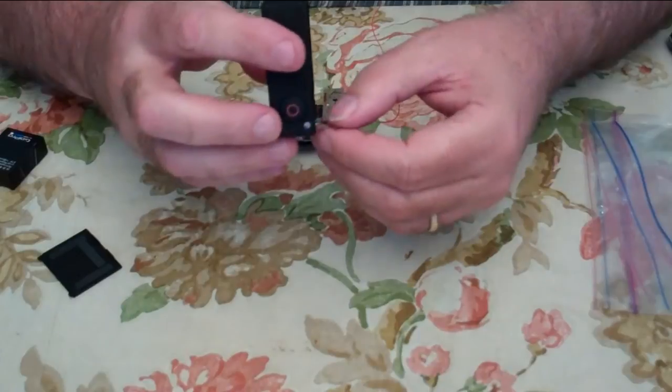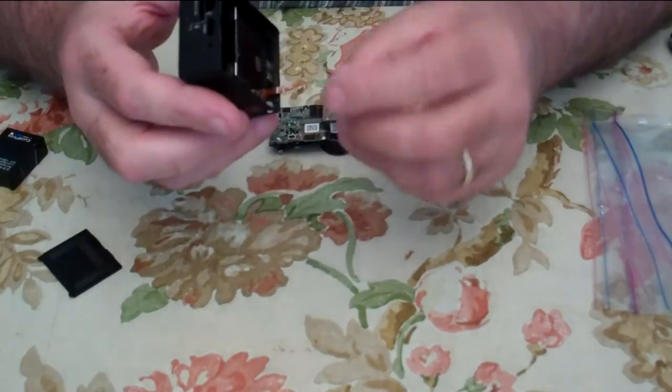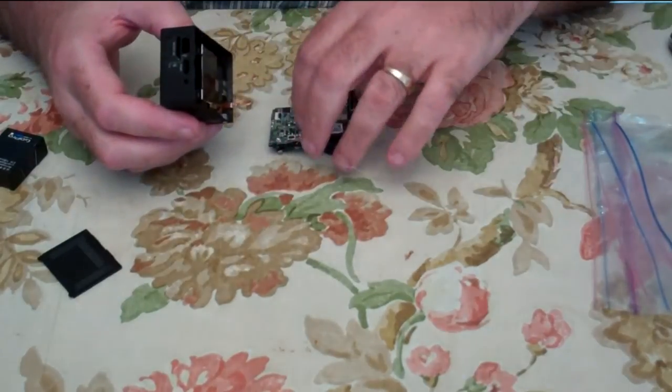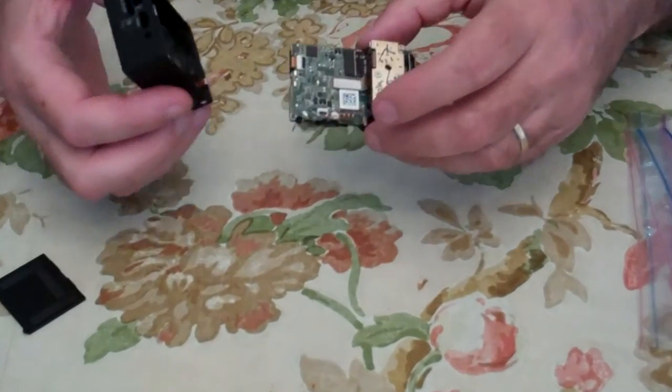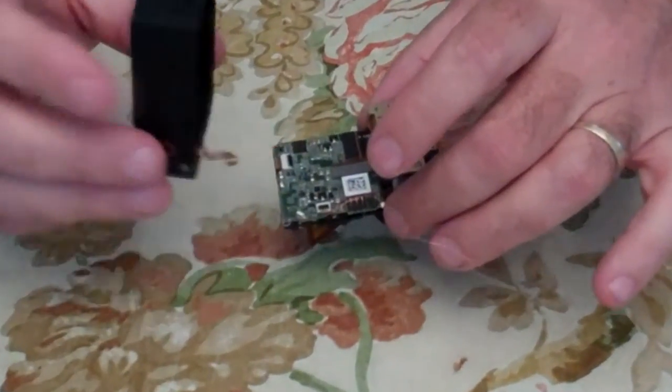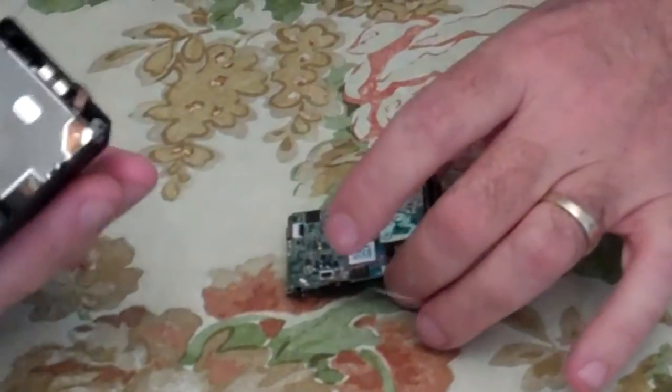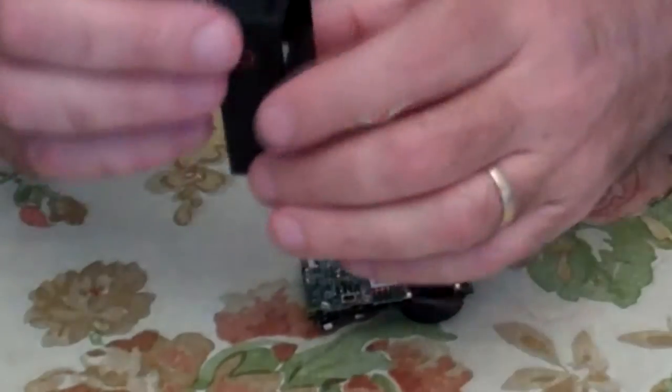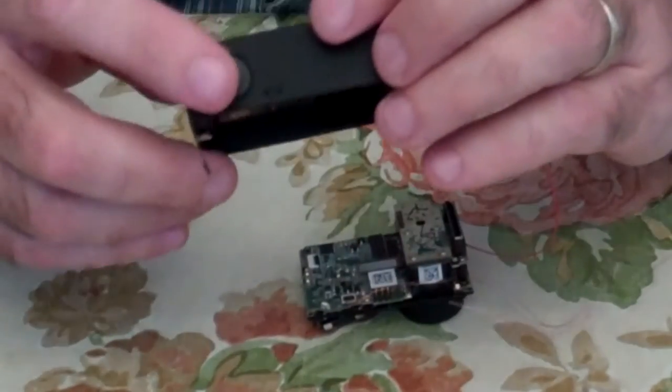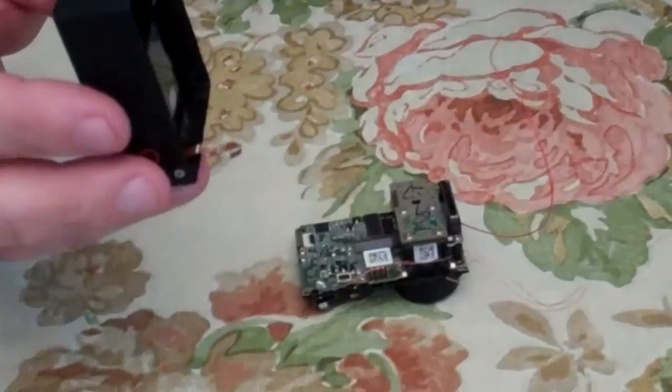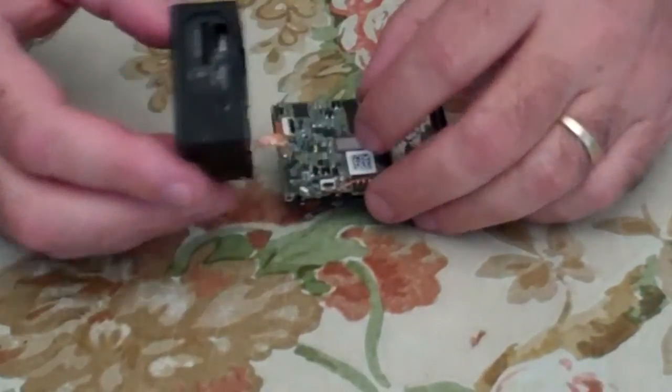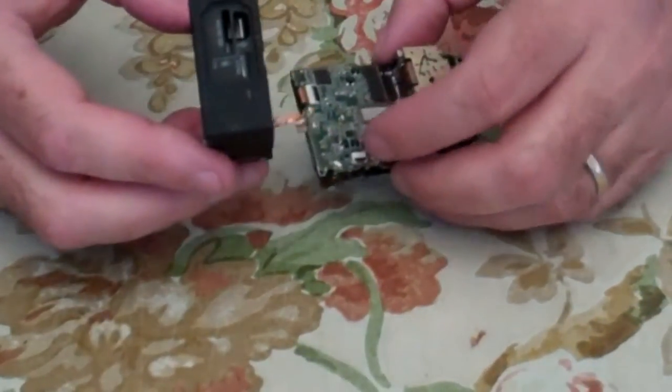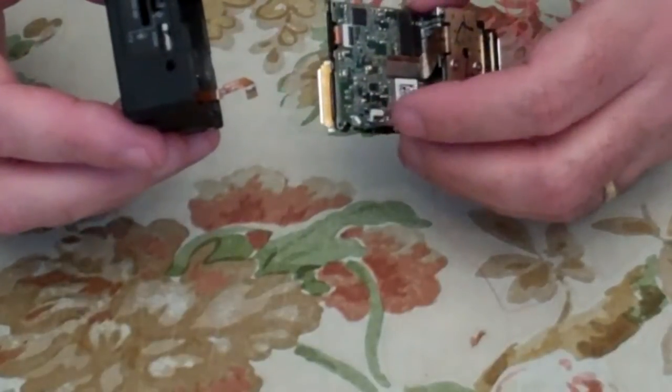First thing we need to do when we're putting this thing back together is reconnect the ribbon cable to the white connector here. Once we reconnect the ribbon cable, we still get our Bluetooth button, record button, and speaker audio beeps.